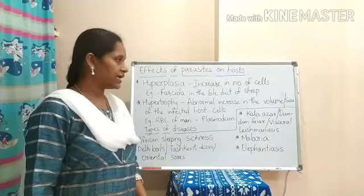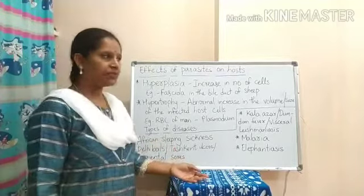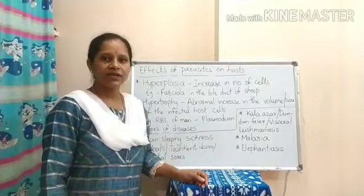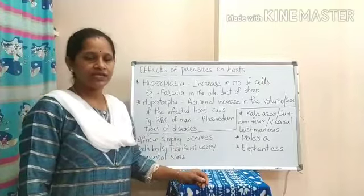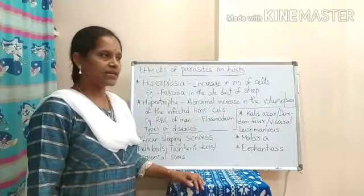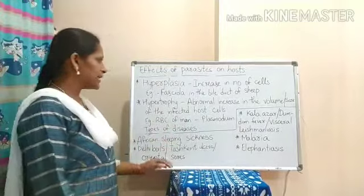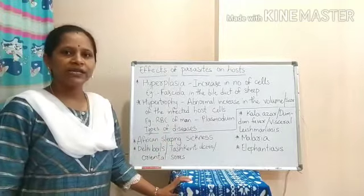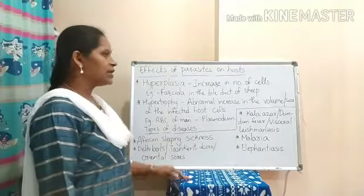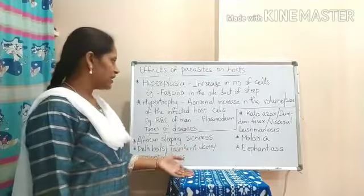Fasciola hepatica is commonly known as sheep liver fluke. The next type of effect shown by the parasite is hyperplasia. Hyperplasia is an increase in the number of cells — the number of host cells will increase in this condition. An example is Fasciola in the bile duct of sheep.